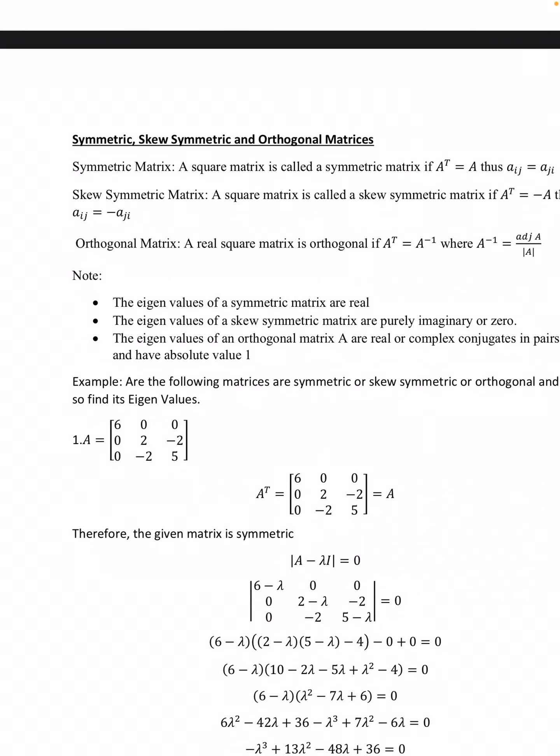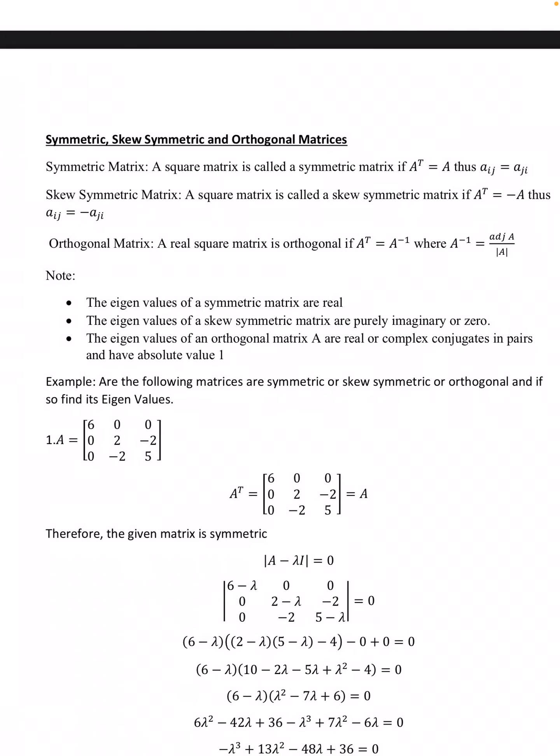Now we have the topic of symmetric, skew-symmetric, and orthogonal matrices. A square matrix is said to be symmetric if A transpose = A, i.e., A(i,j) = A(j,i). A square matrix is called skew-symmetric if A transpose = −A, i.e., A(i,j) = −A(j,i). A real square matrix is orthogonal if A transpose = A inverse. Note: eigenvalues of a symmetric matrix are real; eigenvalues of a skew-symmetric matrix are purely imaginary or zero; eigenvalues of an orthogonal matrix are real or complex conjugates in pairs with absolute value 1.